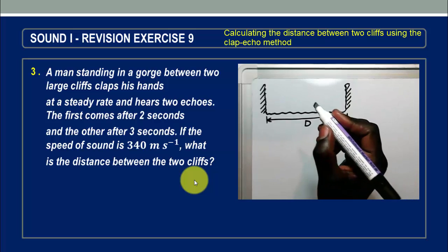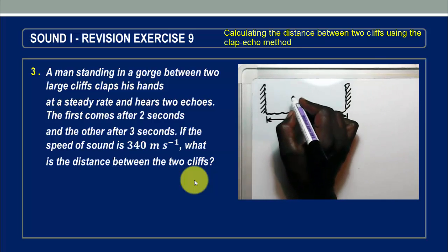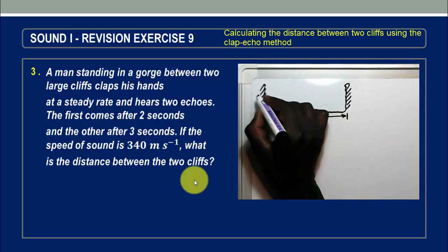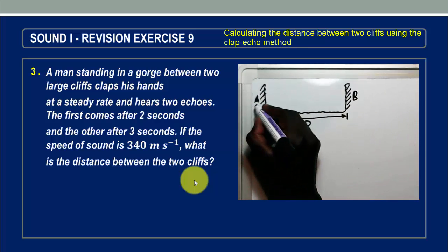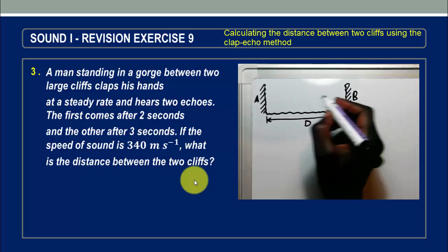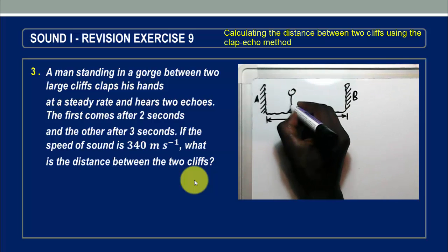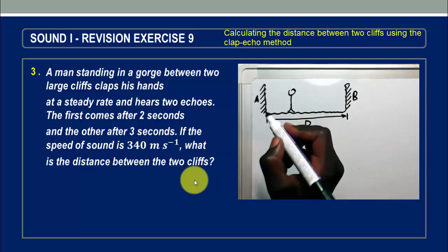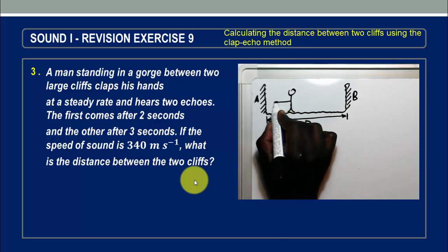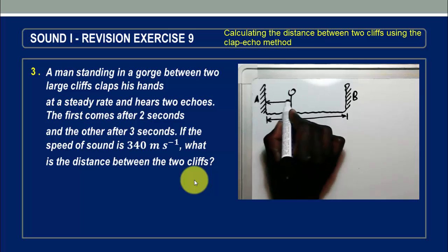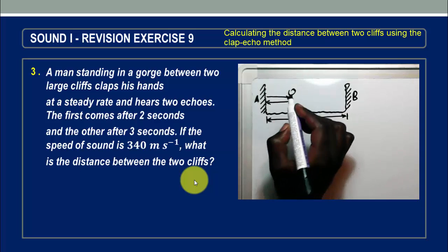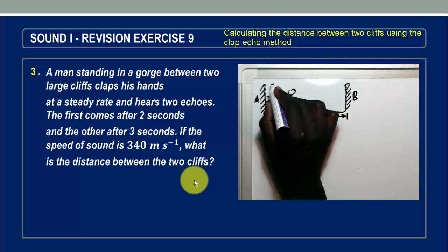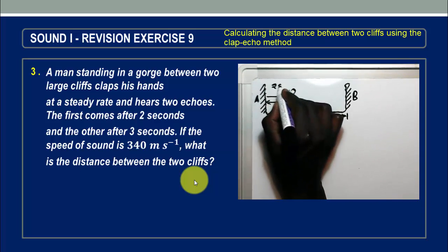We are told that he hears the first echo after two seconds and the second one after three seconds. That means he must be nearer one of them than the other. So let's call this cliff A and this cliff B, and we assume that he's nearer cliff A, so that the sound travels in this direction through some distance X and then comes back through the same distance X after a time of two seconds.